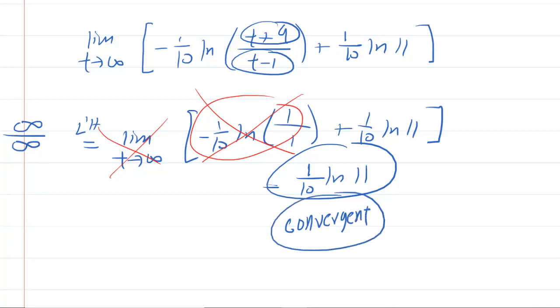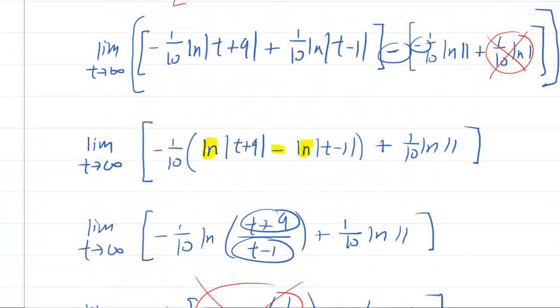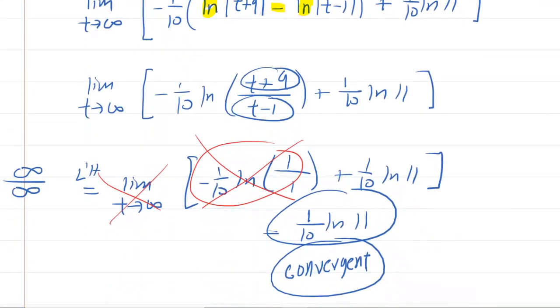And again, notice if we didn't combine the natural logs into a quotient, we might have mistakenly thought we're going to have infinity plus infinity. In fact, now that I look at it, this actually would have been negative infinity over here because of that negative sign. Regardless, it would have been difficult to interpret. So we definitely had to approach it by combining the natural logs together.